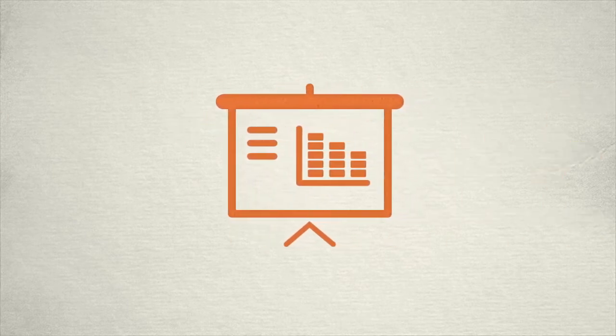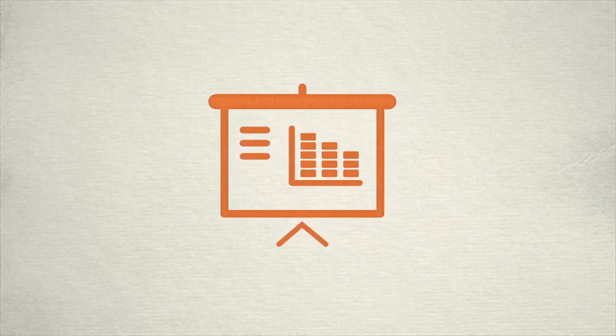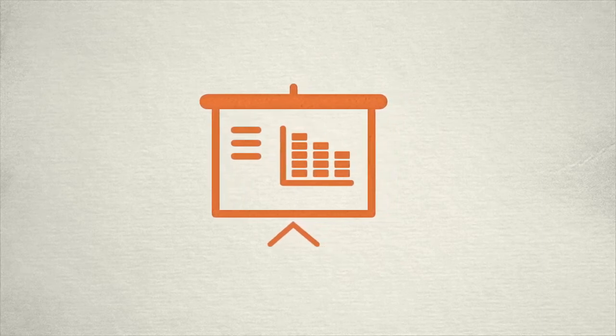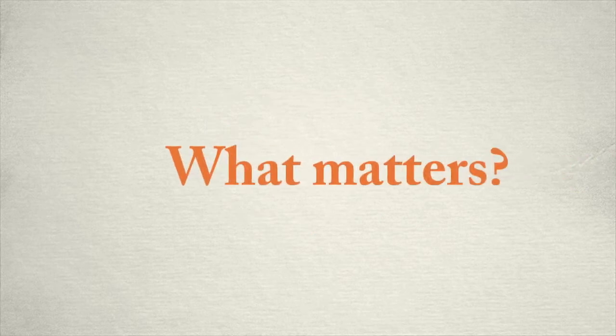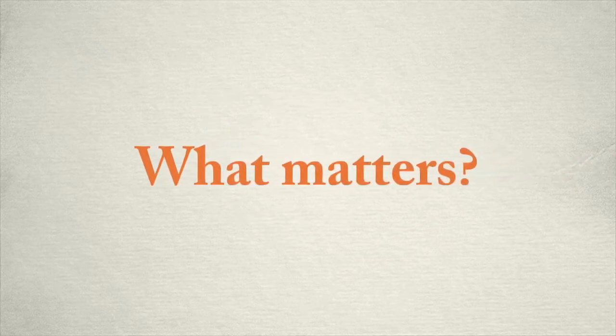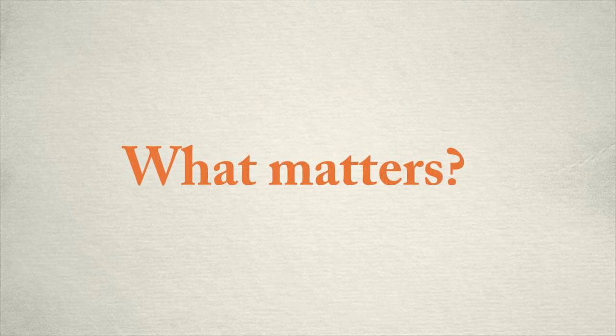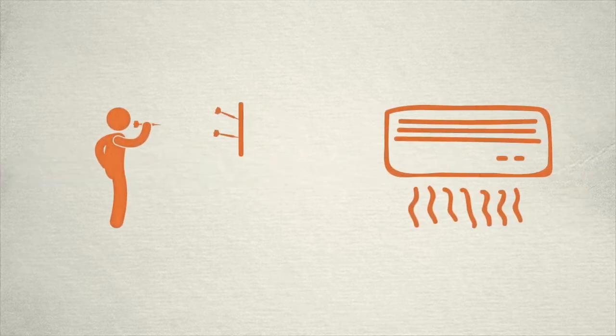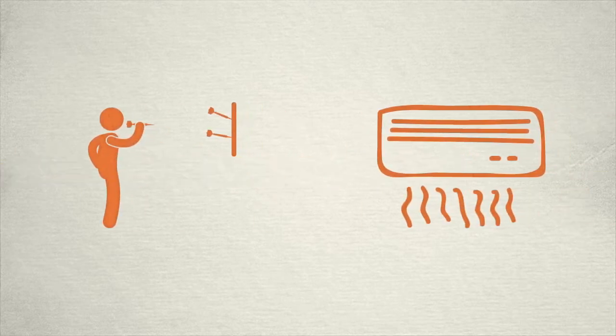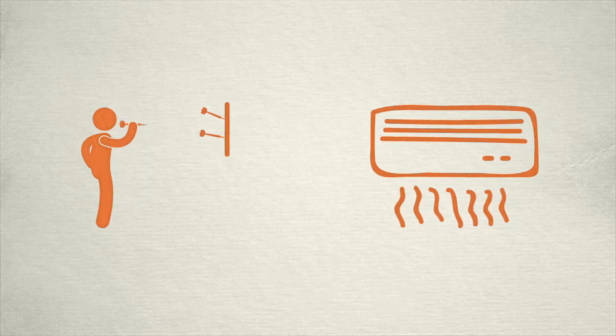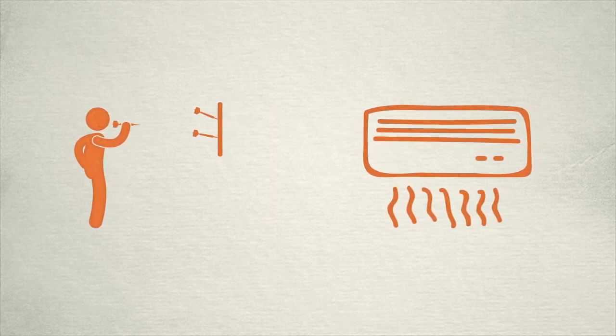Remember, our model is based on patterns of data from observations in the world and it's going to do several things for us. The statistical model can help us figure out which variables matter and which variables don't. For instance, it might tell us that the skill of the dart thrower matters but the air conditioner doesn't. We couldn't have known that until we developed a reliable model.